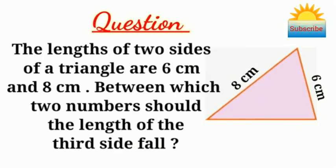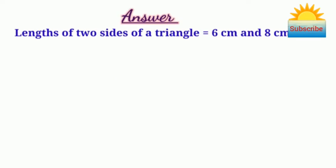The lengths of two sides of a triangle are 6 cm and 8 cm. Between which two numbers should the length of the third side fall? Lengths of two sides of a triangle are 6 cm and 8 cm.